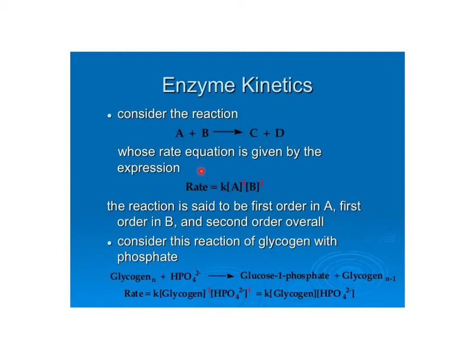So overall, in this example here, the entire reaction is said to be second order, but it's first order with respect to A and first order with respect to B. What that means is if you double the concentration of A — say from 5 to 10 — you're going to double the rate. If you double the concentration of B, you double the rate. Whereas if it was second order with respect to A, doubling A would increase the rate four times, because it would be two squared.